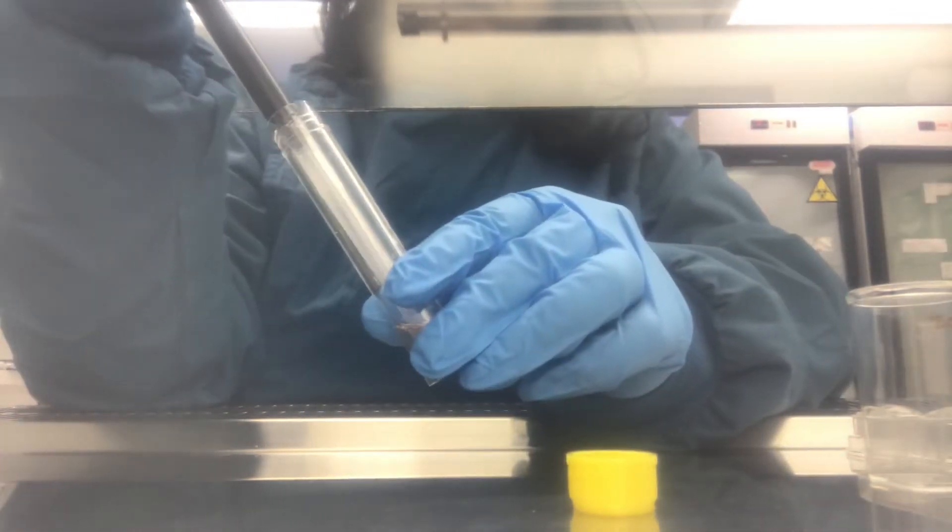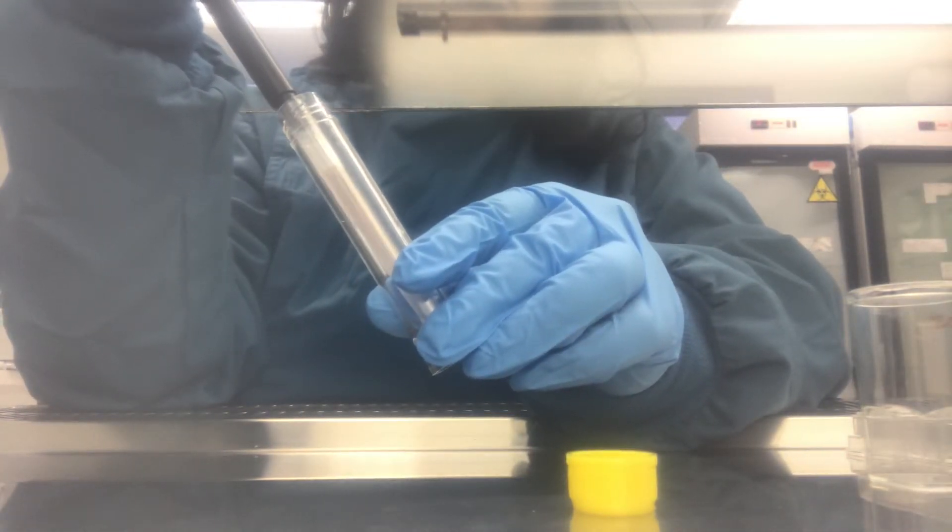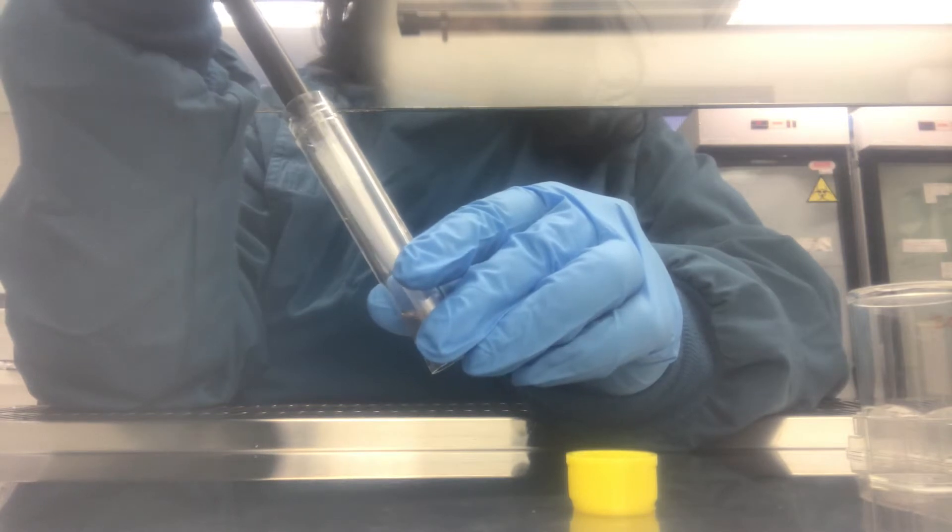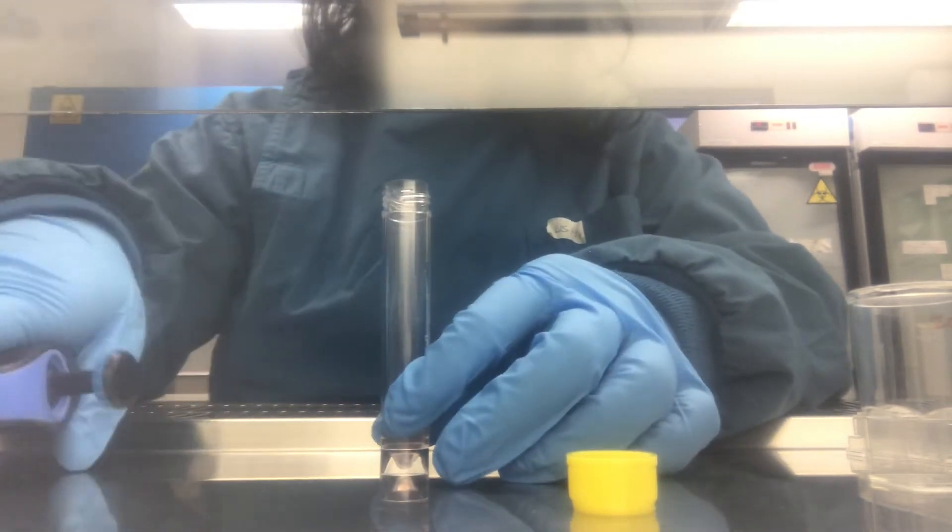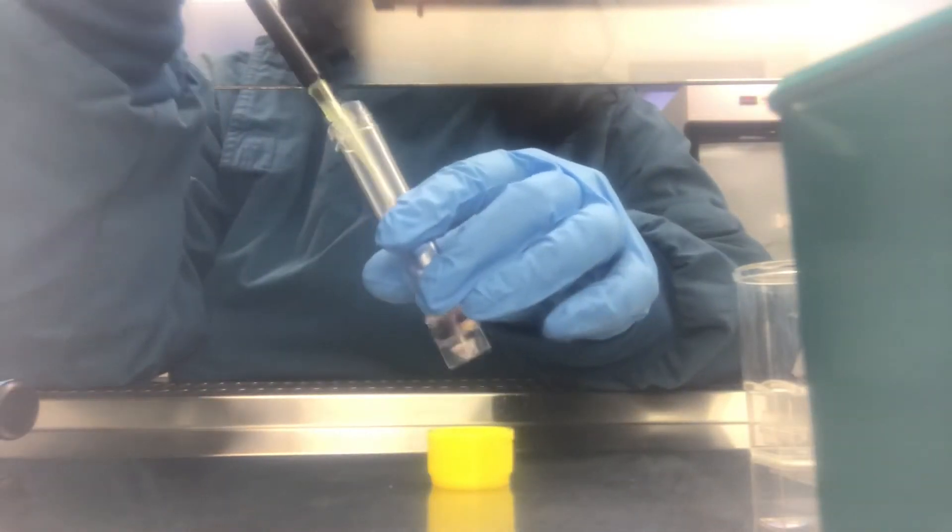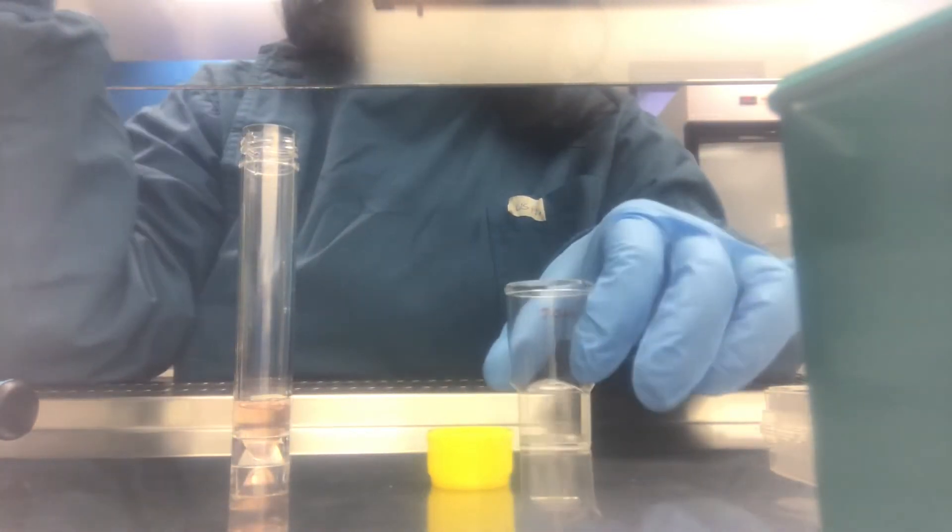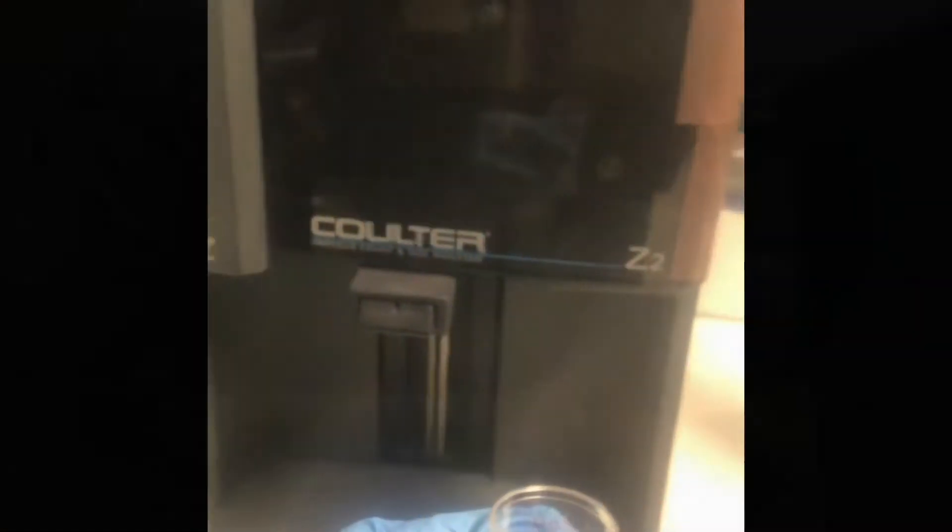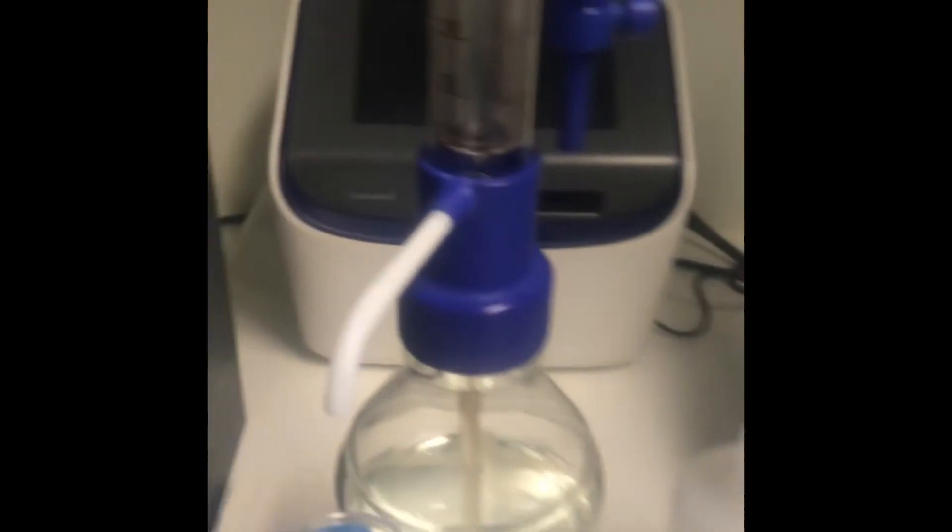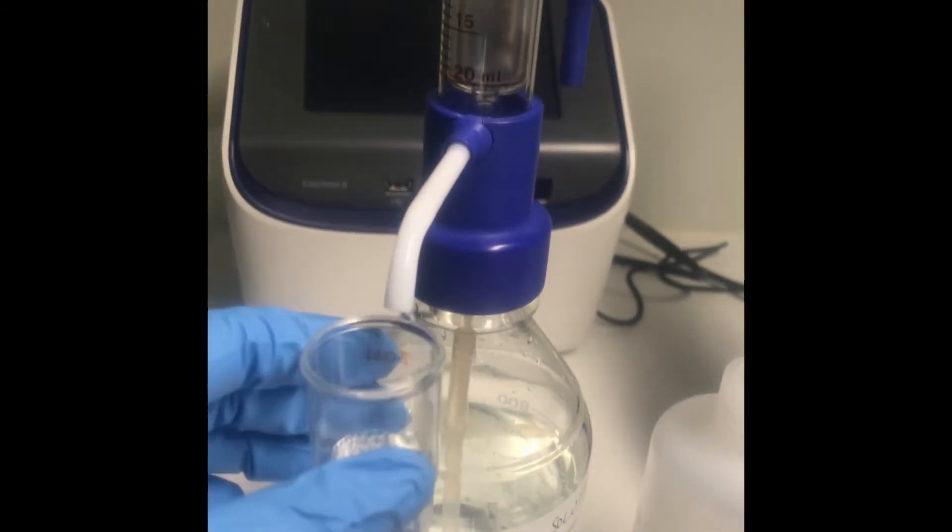I'm resuspending the pellet in one ml of fresh media which is at room temperature, and then I'm collecting only 20 microliters for cell counting. Based on the size of the pellet, you can use either less or more of the media to count.